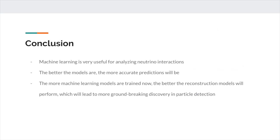Overall, machine learning is becoming a very integral part of today's technology, and any kind of improvements that can be made will help increase the performance of machine learning algorithms. Making sure that these algorithms are the best they can be is going to be very important for when the DUNE project is fully up and running so that the results can be used to further knowledge of the universe.